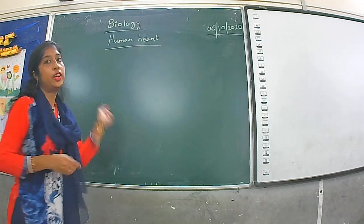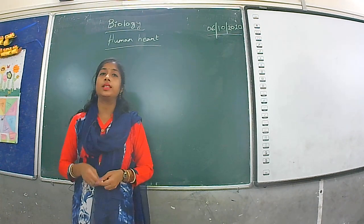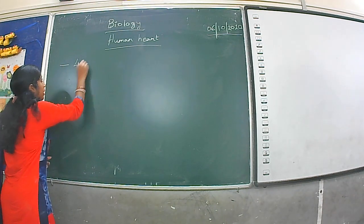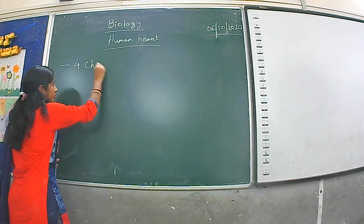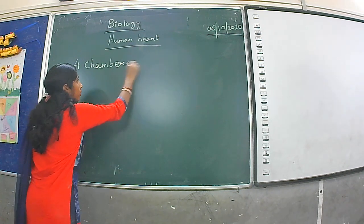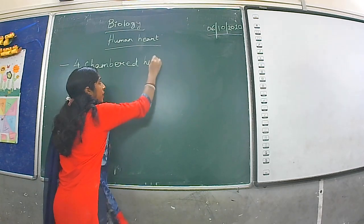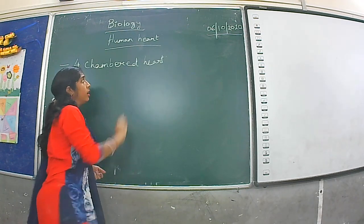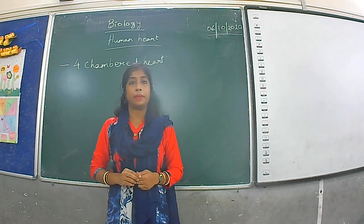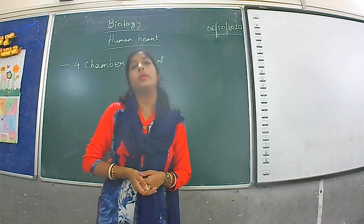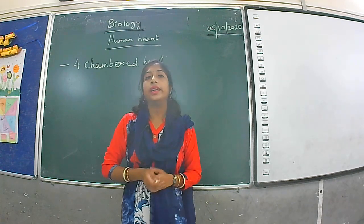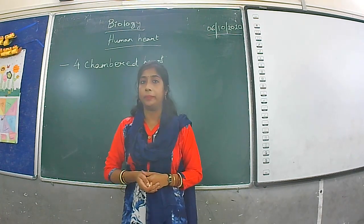First of all, as we all know, the human heart is a four-chambered heart. There is a left auricle, left ventricle, right auricle and right ventricle. We have already learnt about this in the previous class. Now, the human heart is a conical hollow muscular organ.